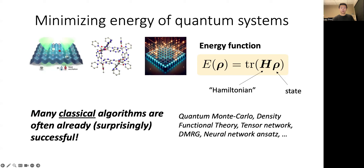To address this problem, many powerful classical computational methods have already been developed. These classical methods often work surprisingly well and can find ground states of many physically relevant quantum systems. While in some cases these methods might appear to fail, it can also be difficult to rule out alternative classical algorithms with better performance. It is an important open question in the field whether quantum computers have an advantage in finding low energy states of quantum systems.